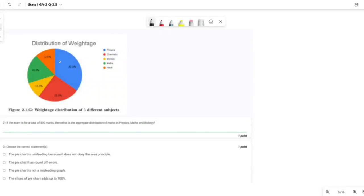Second and third question, we have given this pie chart and we have to solve them. Second question: if the exam is for a total of 500 marks, so we got total is 500 marks.